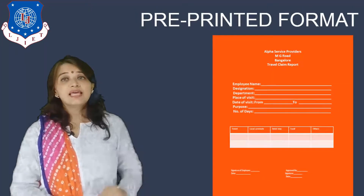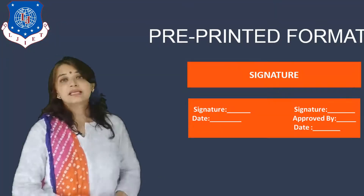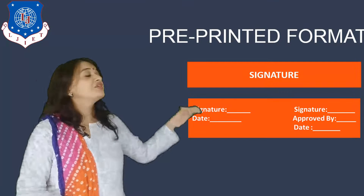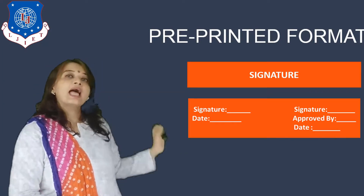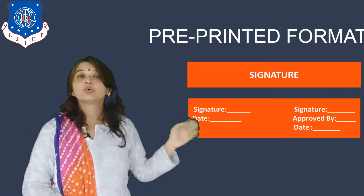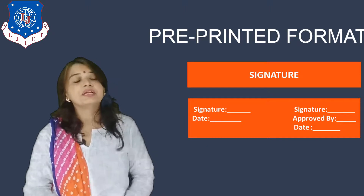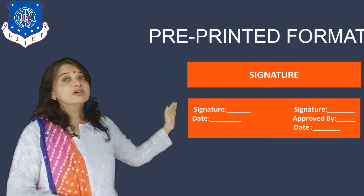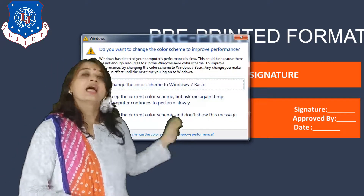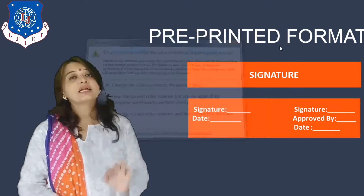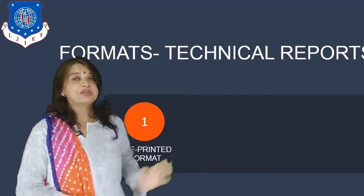The last element of this pre-printed format is the signature. We require the signature of the person who travelled and the signature of the person approving the reimbursement, along with the date. You will sign and write the date on which you are submitting the report, and the approver will sign and write their name and date. This is all about the pre-printed form.